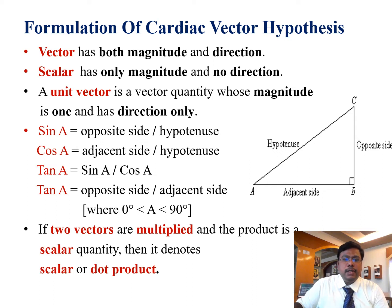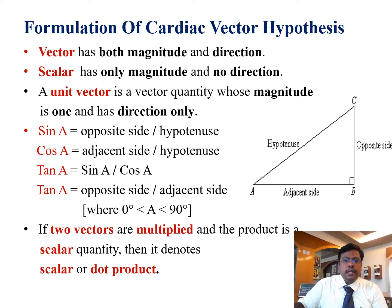Now I will discuss the formulation of my cardiac vector theory. Before that, I will cover basic concepts in vector algebra. A vector has both magnitude and direction; a scalar has only magnitude and no direction. The unit vector is a vector quantity whose magnitude is one and has direction only. From a right angle triangle ABC, sine theta equals opposite side by hypotenuse, cos theta equals adjacent side by hypotenuse, and tan theta equals opposite side divided by adjacent side. If two vectors are multiplied and the product is a scalar quantity, it denotes a scalar dot product.